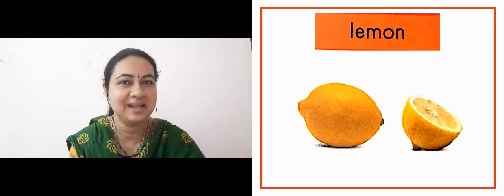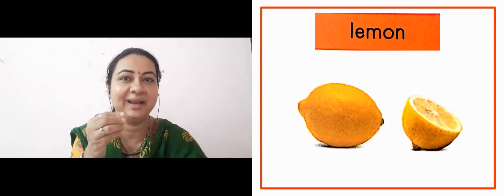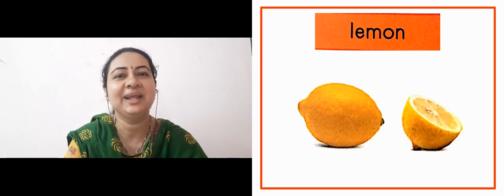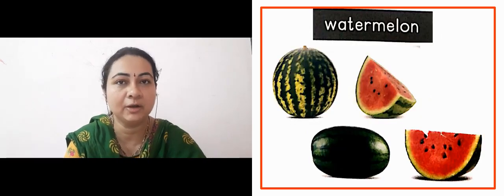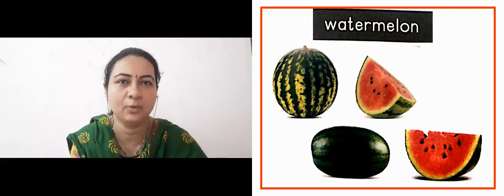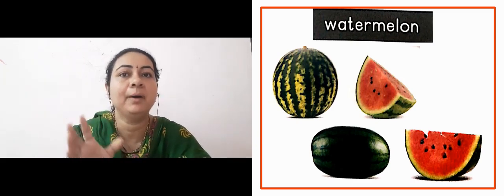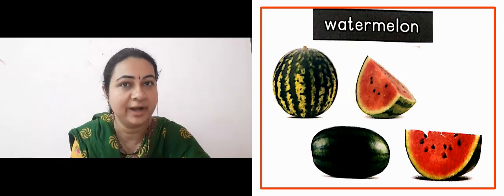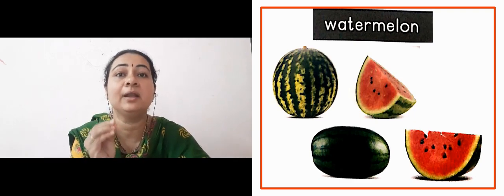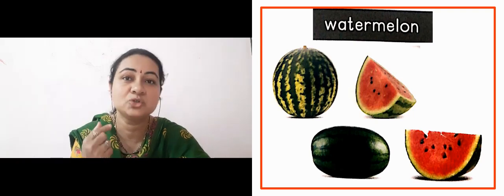The next slide is showing us lemon. Lemon is very sour, but its juice is great — we make sherbet from it, which we call nimbu paani. The next slide is showing us watermelon. Its outer skin is dark green in color, but once you cut it, the pulp inside is of red color, and its seeds are black.